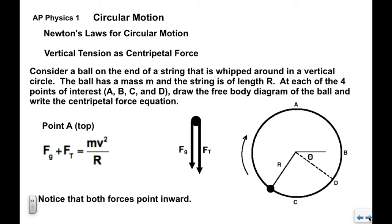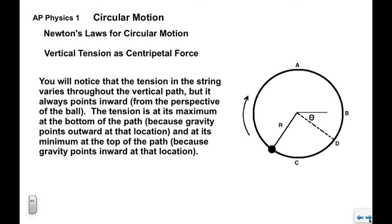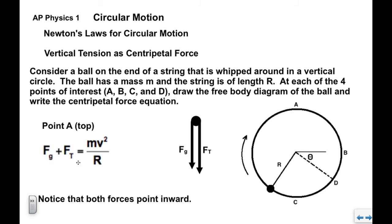We'll look at point a, and again at point a, the top, down is positive. We have fg pointing down as it always does. And then of course we have ft. As far as the ball is concerned, the string can only pull. So the string is going to pull down at that point a. We have ft and fg both pulling inward. When we write the force equation, they're both positive. Fg plus ft equals mv squared over r.